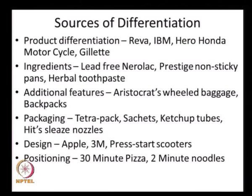Differentiation can come in different forms. To begin with, from the product differentiation itself. Examples include the electric utility vehicle Reva, IBM, Hero Honda when it introduced its first four-stroke motorcycle, or Gillette. Firms can provide differentiation that is clearly visible in the product offering itself.